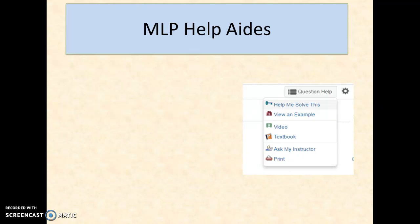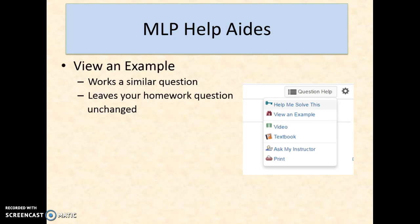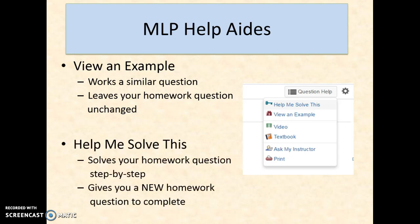When doing homework, MLP will give you immediate feedback to let you know if your answer is correct. In the top right corner of the problem screen is a drop-down menu, Question Help. Two of the options there are Help Me Solve This and View an Example. View an Example works a similar problem with different numbers, but shows you the process step by step. Help Me Solve This works the exact problem you have, but then to ensure you practice on your own, the computer will change the problem on your homework after you view it.